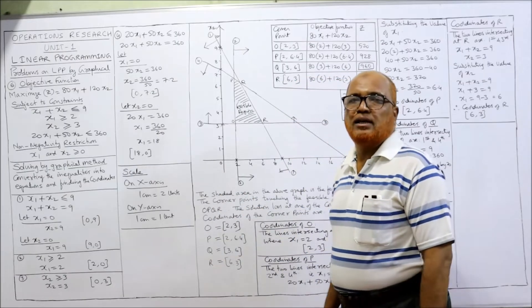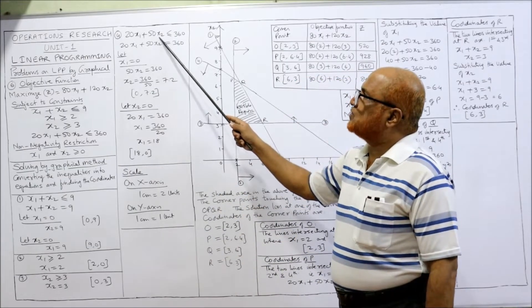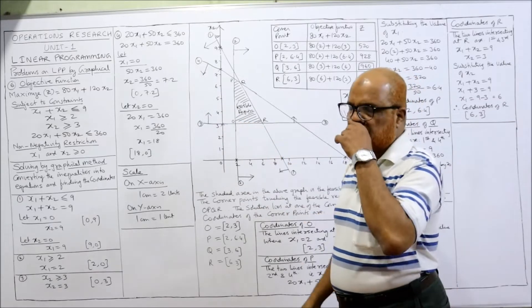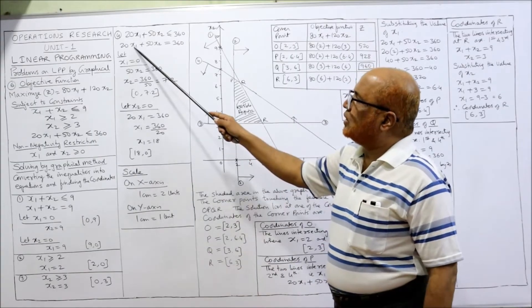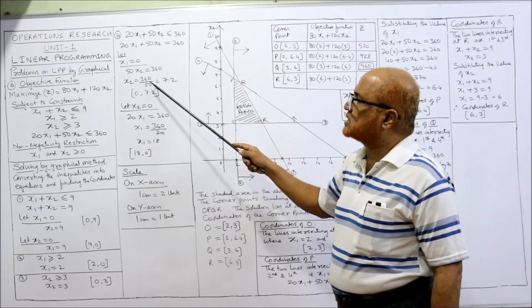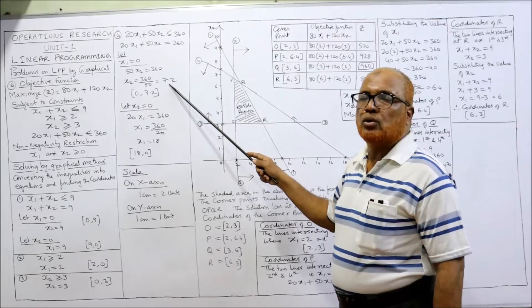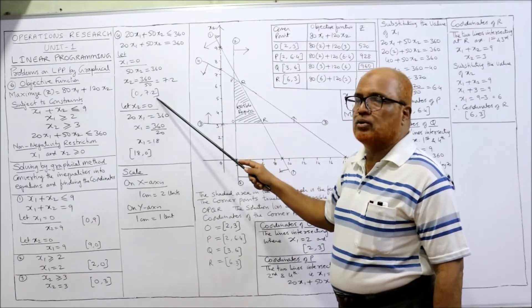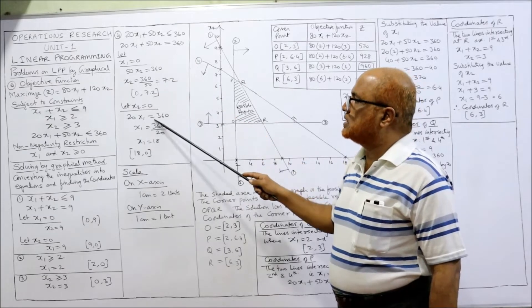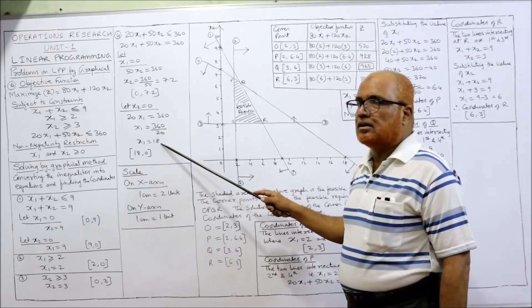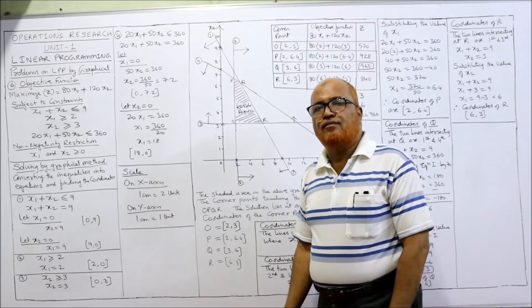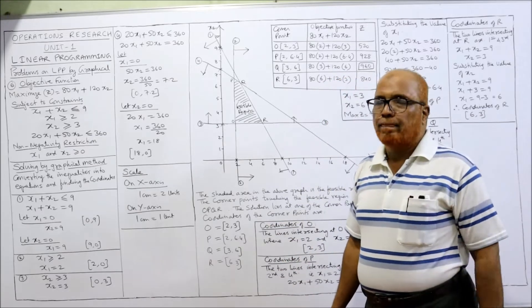Fourth inequality: 20x1 + 50x2 ≤ 360. Convert it — let x1 = 0: 50x2 = 360, so x2 = 360/50 = 7.2. Coordinates: (0, 7.2). Let x2 = 0: 20x1 = 360, so x1 = 18. Coordinates: (18, 0). So we got all the coordinates of the four inequalities.